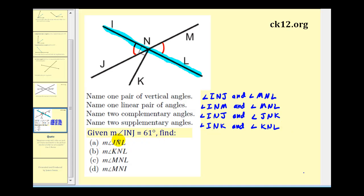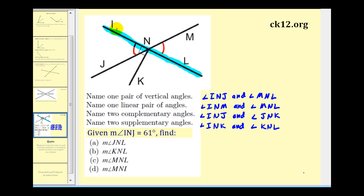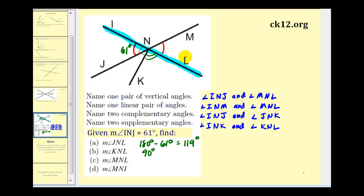Given that angle INJ is sixty-one degrees, let's find the measure of the following angles. Angle JNL and the given angle form a straight angle and are therefore supplementary, so angle JNL would be one hundred eighty minus sixty-one degrees, which is one hundred nineteen degrees. Angle KNL and angle KNI are supplementary, and since angle KNI is ninety degrees, angle KNL must also be ninety degrees. Angle MNL is a vertical angle with the given angle, therefore angle MNL must be sixty-one degrees.